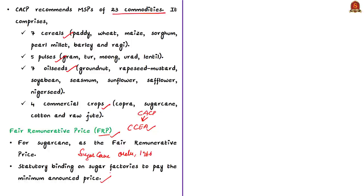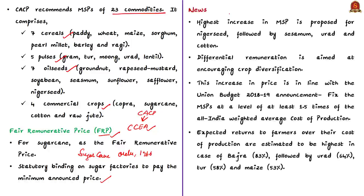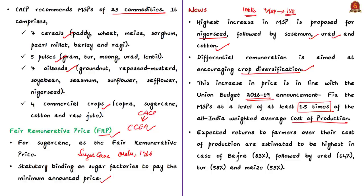Returning to the news article, the highest increase in MSP is proposed for niger seed, followed by sesame, urad and cotton. This differential remuneration aimed at very high prices for different crops is to encourage crop diversification. This increase is in line with the 2018-19 budget announcement of fixing MSPs at at least 1.5 times of the all-India weighted average cost of production. So if average cost of production is 100 rupees, the minimum MSP will be at least 150 rupees, ensuring farmers get at least 50% more than their cost of production.